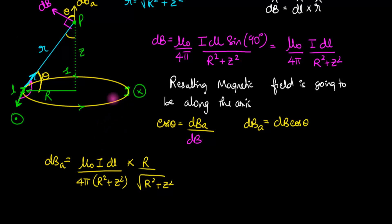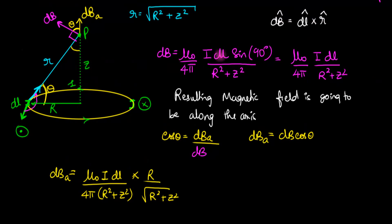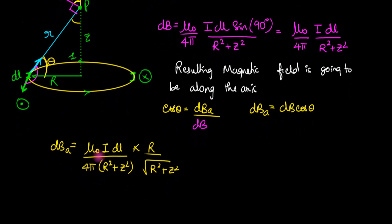This is along the axis. For every single small piece that I choose, all I need to think about is this axial component, because it's only the axial component that adds up. There's another component perpendicular to this direction, and that component is going to cancel out. That perpendicular component cancels out with the magnetic field created by the diametrically opposite element — every diametrically opposite pair cancels the horizontal component. So we are good to go: the axial component is all we need, and therefore we can now integrate.